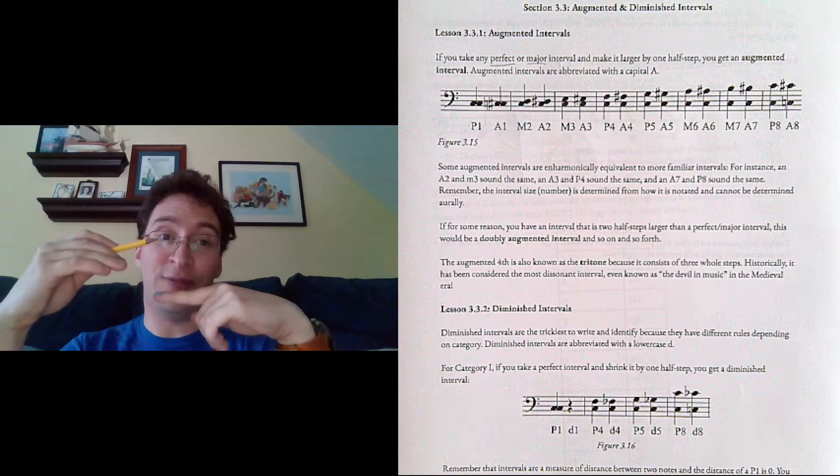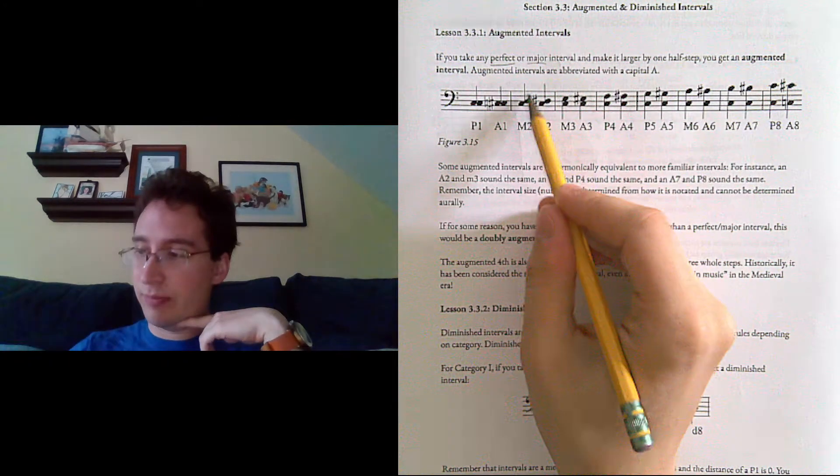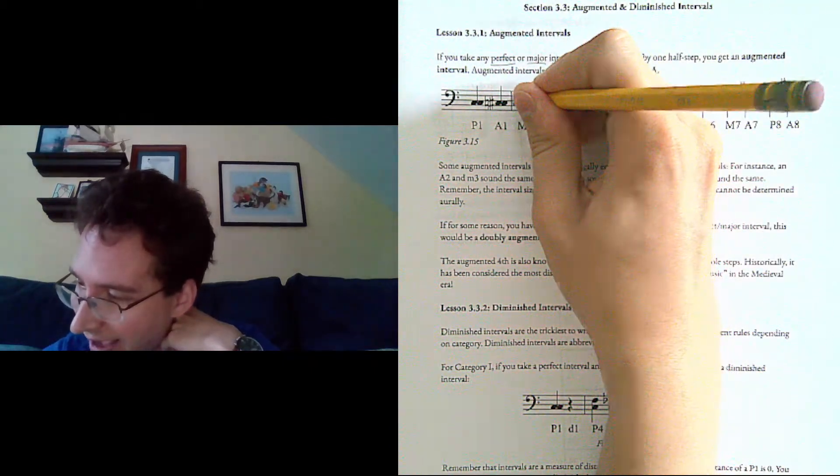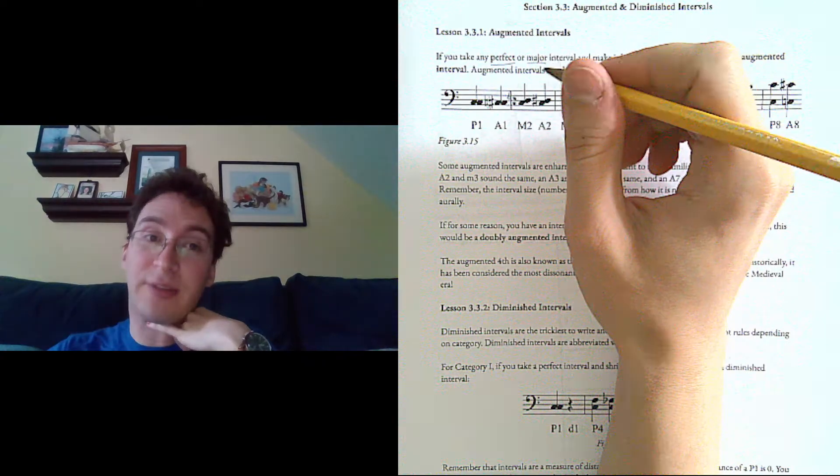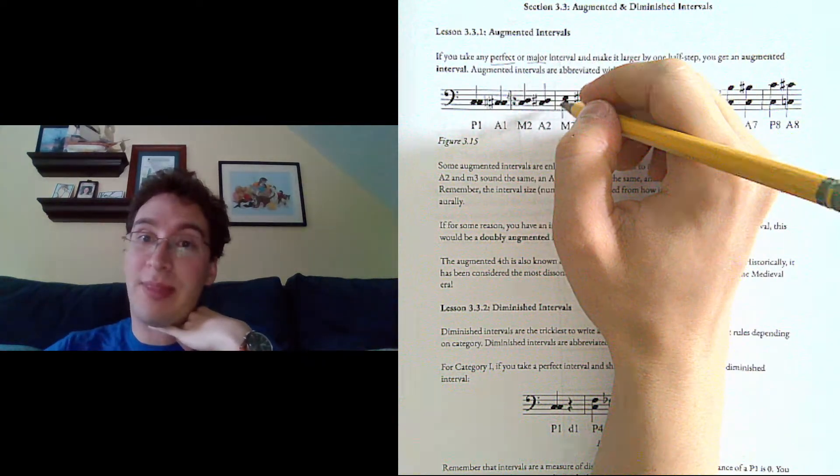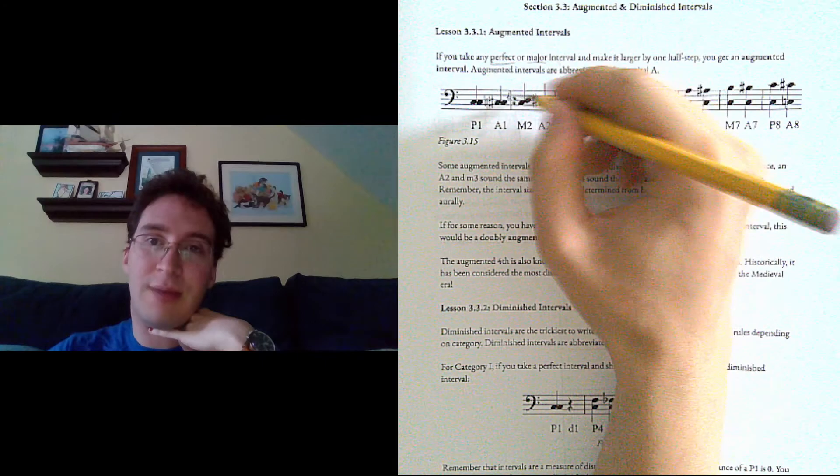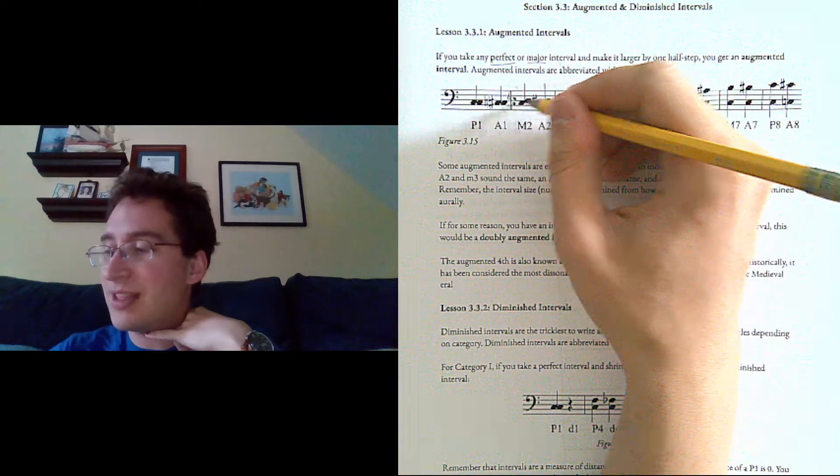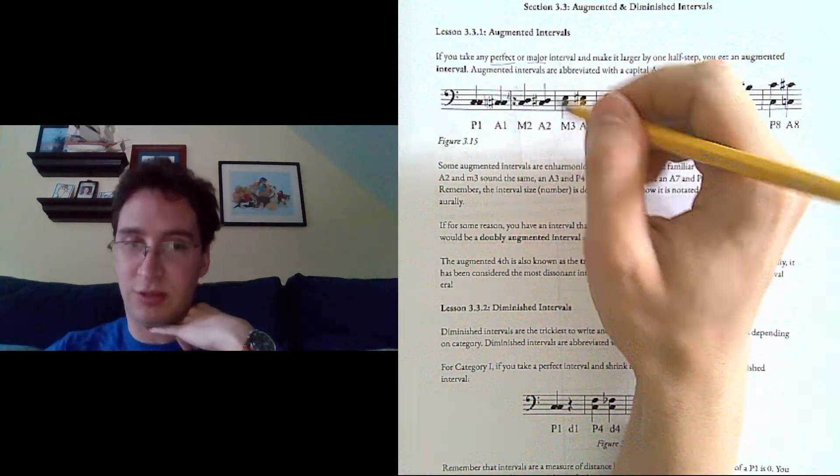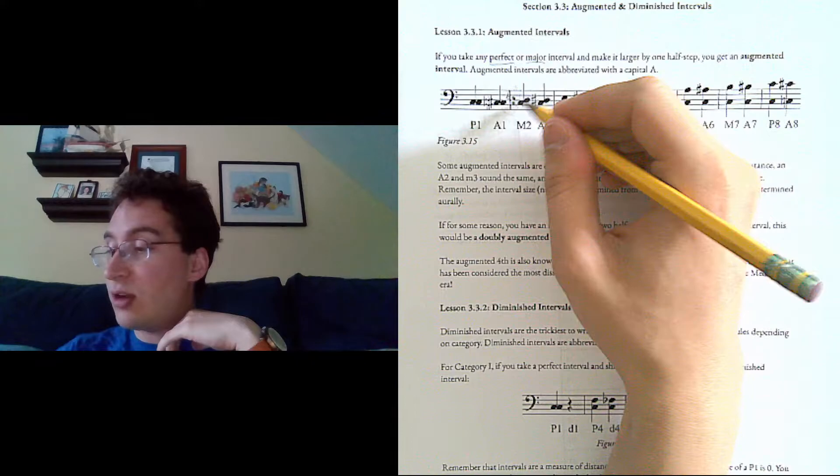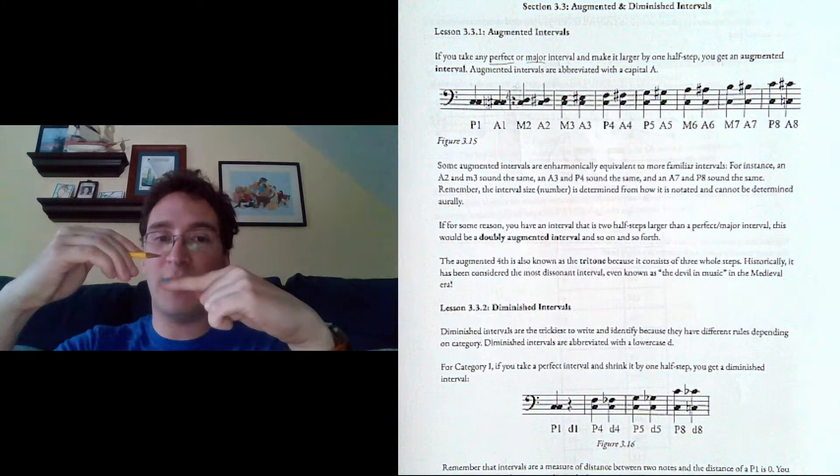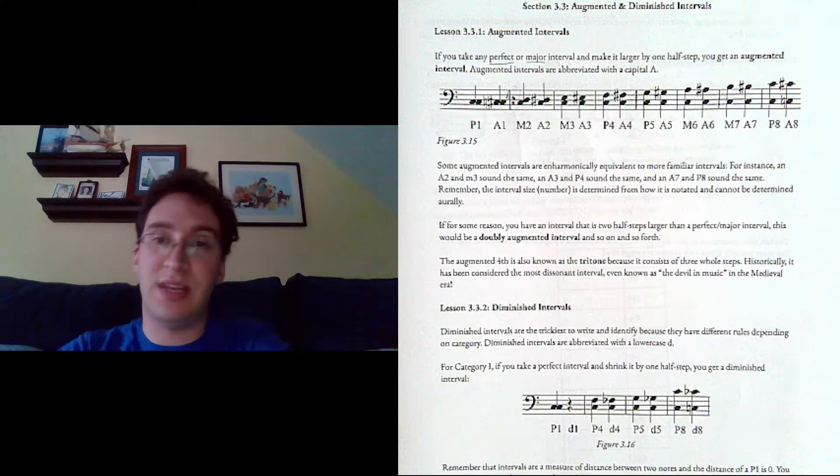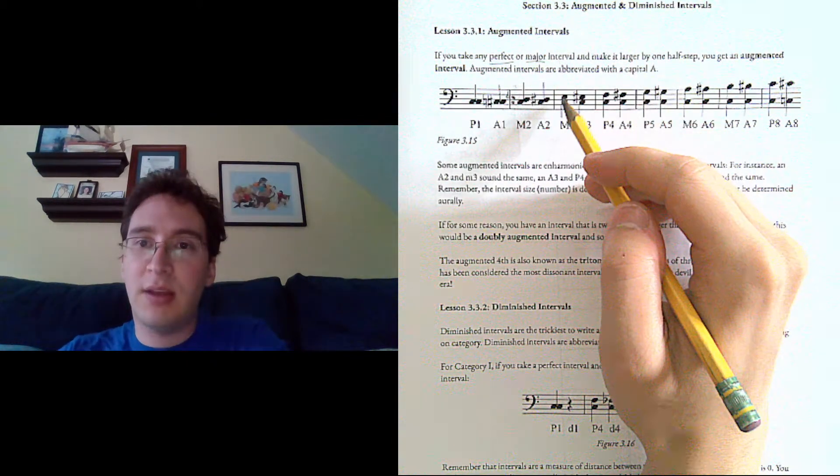Notice that C to E flat would also be a half step bigger than C to D. However, C to E flat is a third, specifically a minor third. So that has nothing to do with an augmented second. I mean, they sound the same, but it can't be an augmented second because it's a third. So you have to keep them in the same staff positions while increasing them by a half step. But the same thing could go the other way. C to D, if you make C a half step lower to C flat, C flat to D would also be an augmented second. You have examples here.